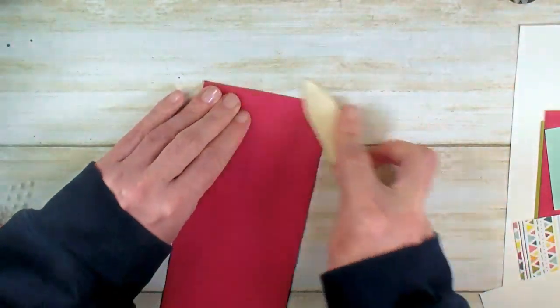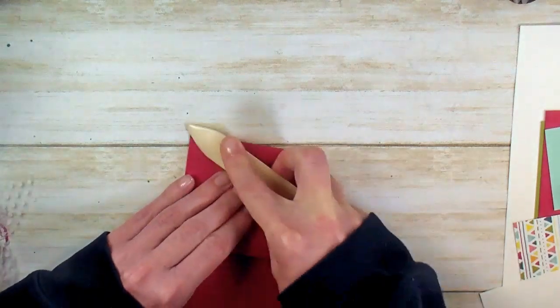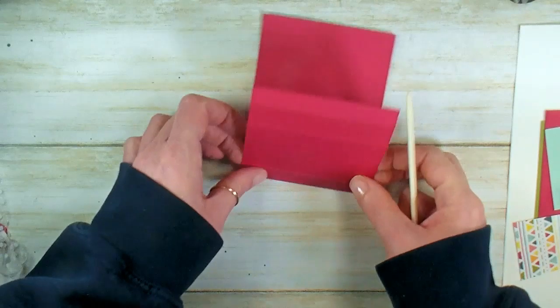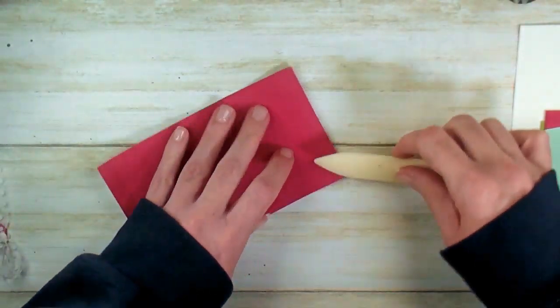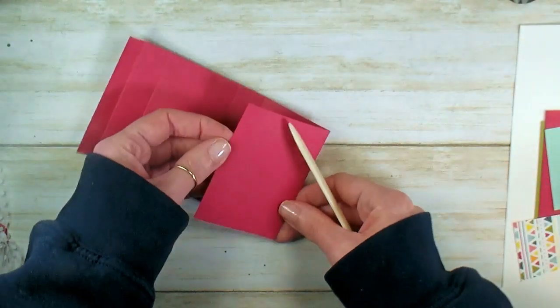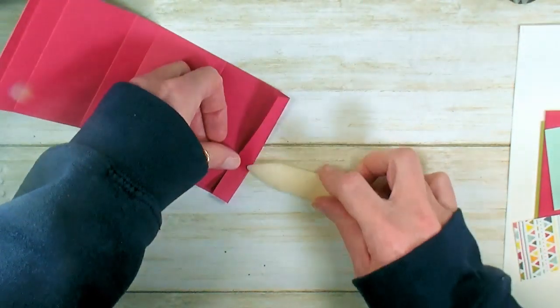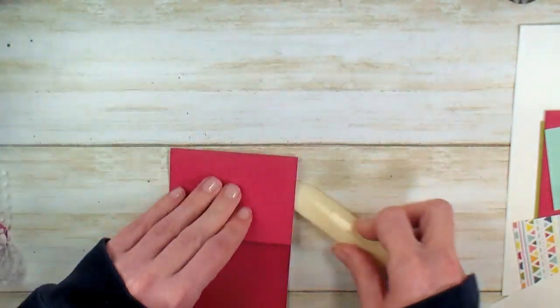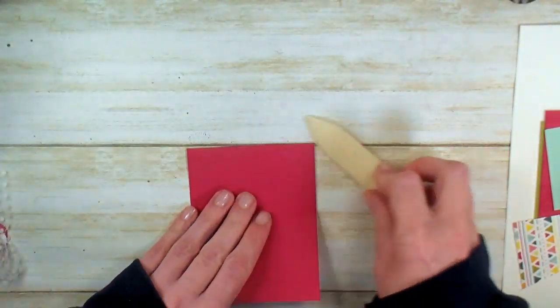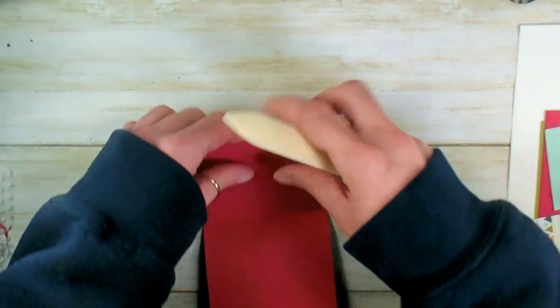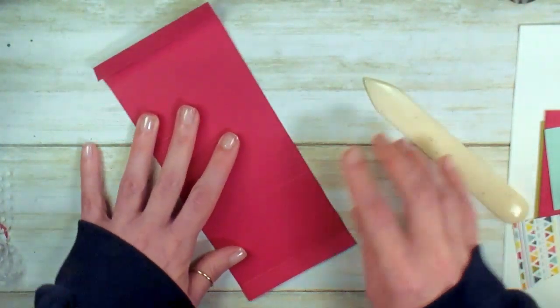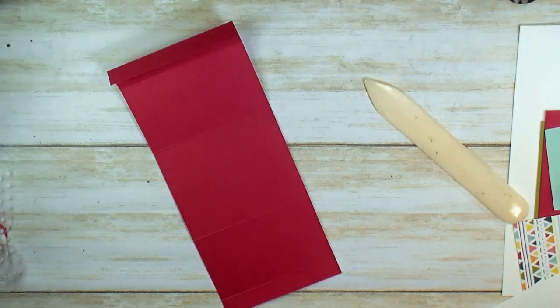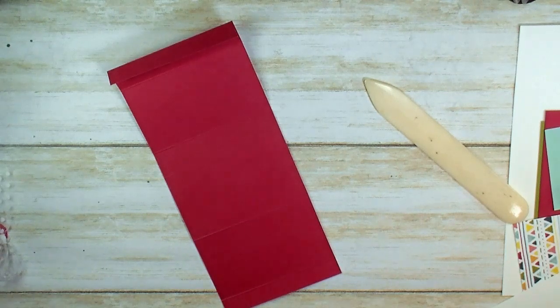Now we're going to use our bone folder and work these creases. You've seen this before. The slider box is very similar to the little candy box that we did. This one will hold a far bigger treat. Remember, though, your bigger treats are heavier treats.